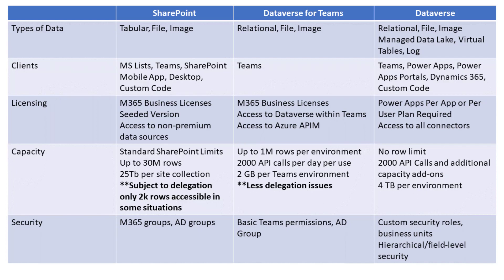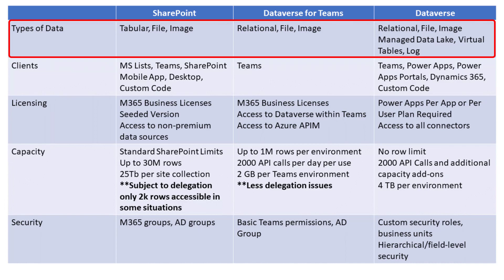One of the big distinguishing factors is the type of data each stores. With SharePoint, it's a great collaboration tool and we can use it to store files and collaborate on files and even tabular data with SharePoint lists. The key with SharePoint, though, is it's not a relational database, and that's the distinguishing factor between it and Dataverse for Teams and Dataverse. With those two options, you're getting relational data storage — you're able to easily define relationships between different tables in your data.